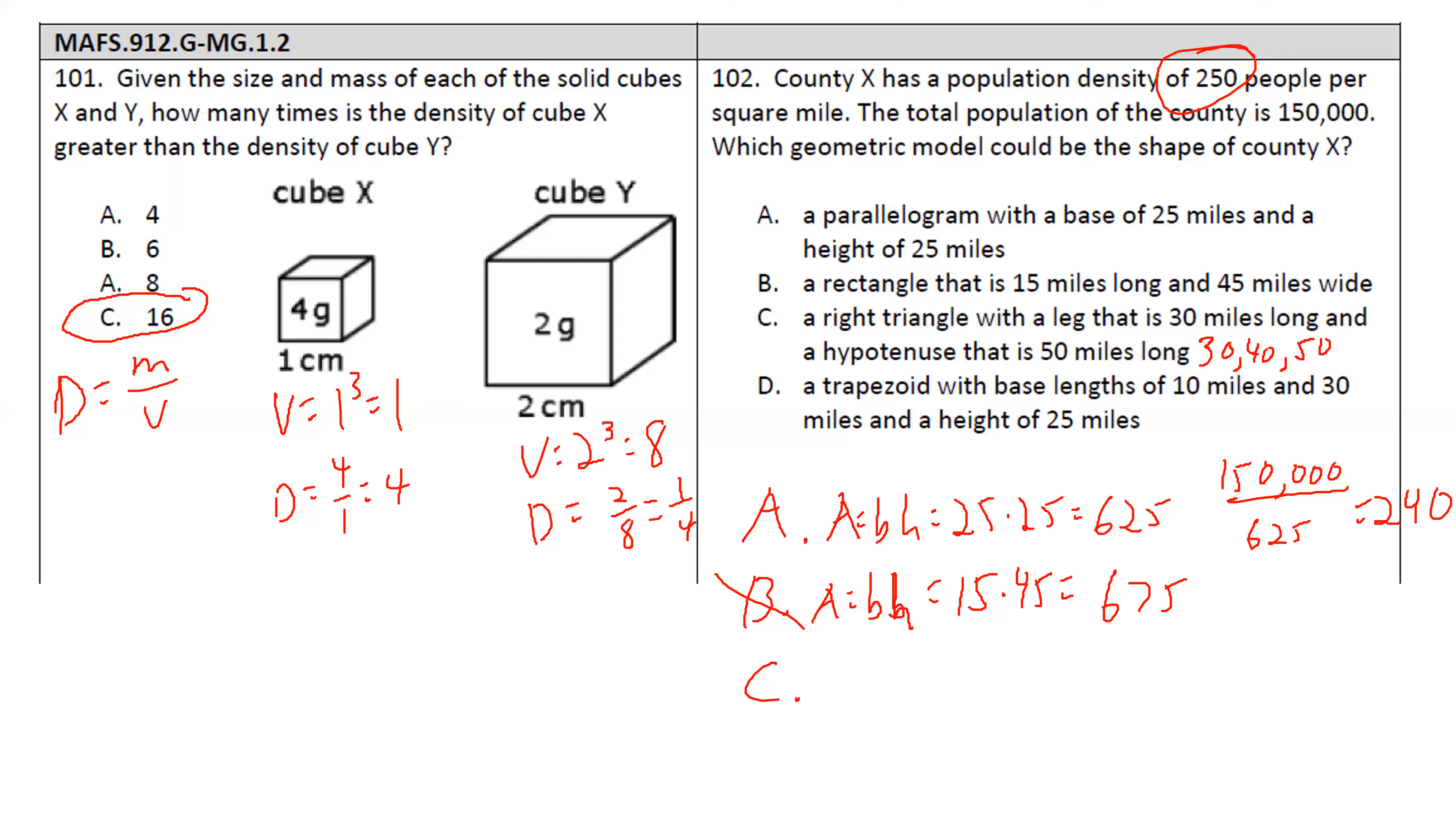30, 40, 50. It's our 3, 4, 5 times 10. So for this one, the triangle is one half base times height. So one half times 20 times 30, which is 600. Divide 150,000 by 600, and that gives us 250. So C is our answer.